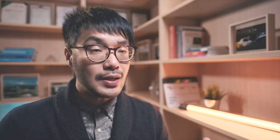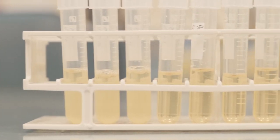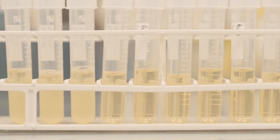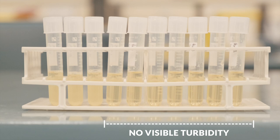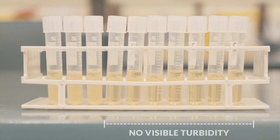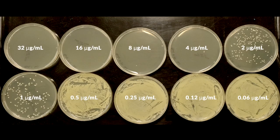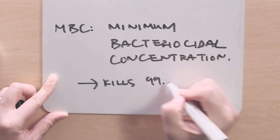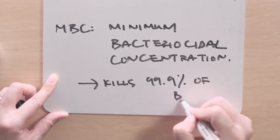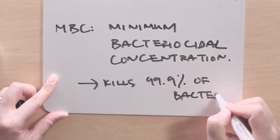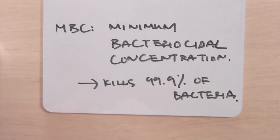We measure MBC by serially diluting the antibiotic as before and adding them to bacterial cultures. Of the tubes with no visible turbidity, the broth culture is subcultured onto agar plates. The lowest concentration that allowed less than 0.1% of the original bacterial sample to survive is the MBC. We can assess this by counting the colonies on all the plates.